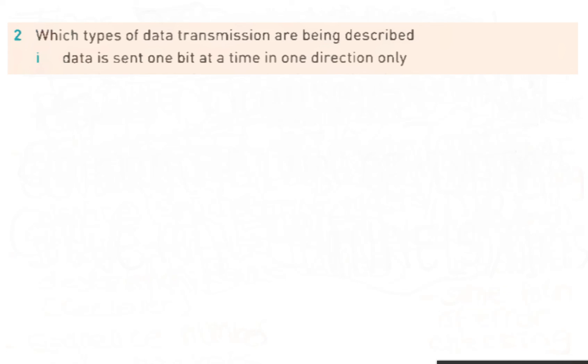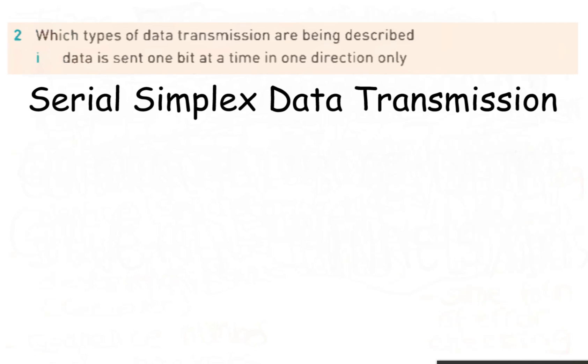Which types of data transmission are being described? Data is sent one bit at a time in one direction only. The correct answer is: serial simplex data transmission.